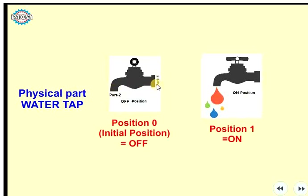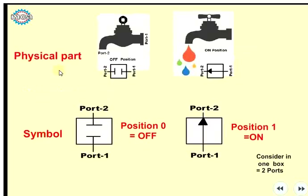We want to represent the symbols. We have ports — port 3 and port 2. In the initial position, we have ports at 0. If you take the left, we can see each corner. If you don't have water flow, the water flow will flow.